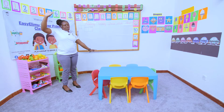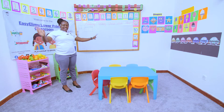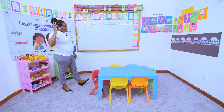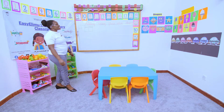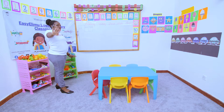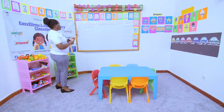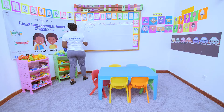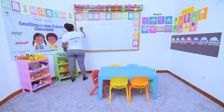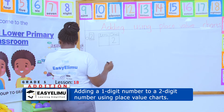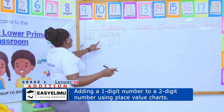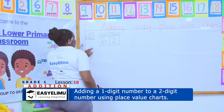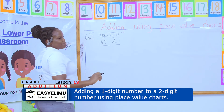Move around like that — ones, tens, ones, tens. Which hand represents the ones? The right hand. And which hand represents the tens? The left hand. So the number on our right hand appears in the ones place value, and the number on our left hand appears in the tens place value.